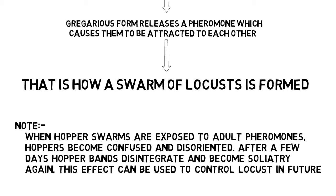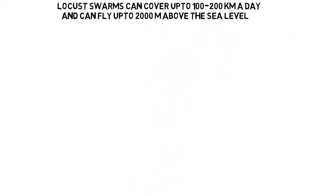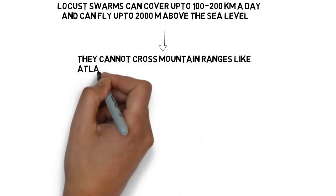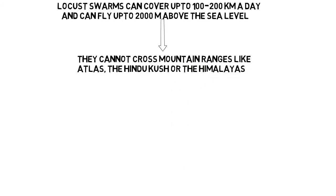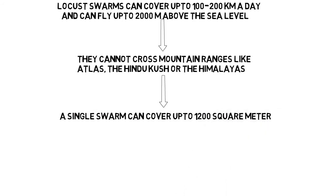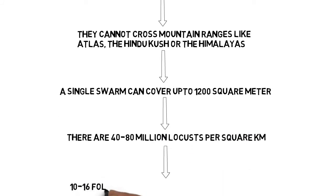Locust swarms can fly with the wind at roughly the speed of wind. They can cover up to 100 to 200 kilometers a day and can fly up to 2000 meters above sea level, so the swarms cannot cross tall mountain ranges like Atlas, the Hindu Kush, or the Himalayas. A single swarm can cover up to 1200 square kilometers and can contain between 40 to 80 million locusts per square kilometer. They can live between three to six months, and a 10 to 16 fold increase in locust number occurs from one generation to the next.